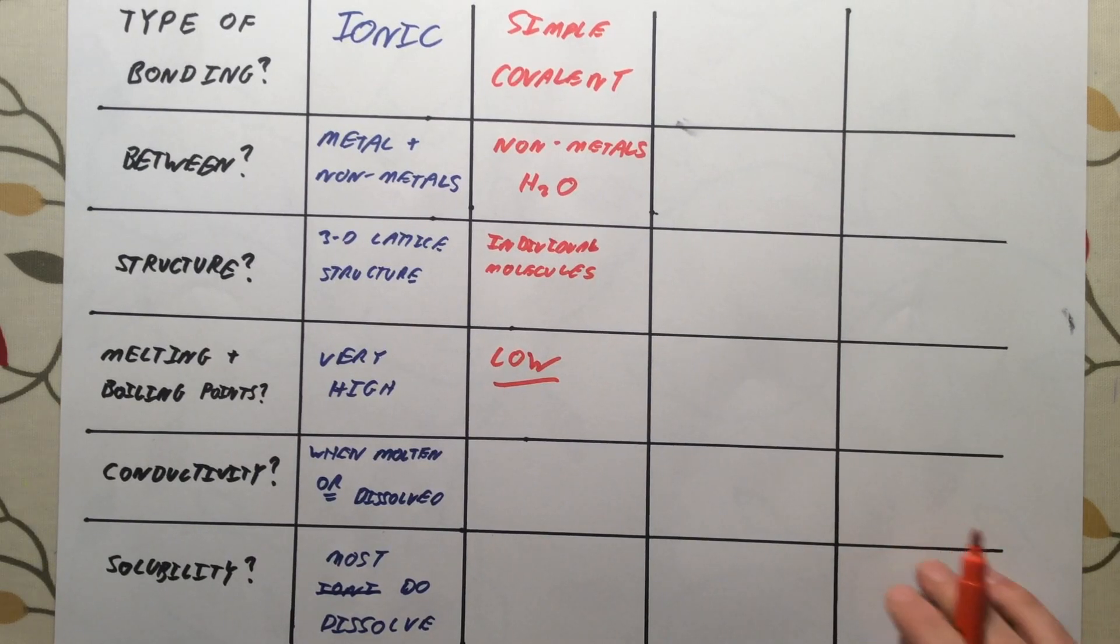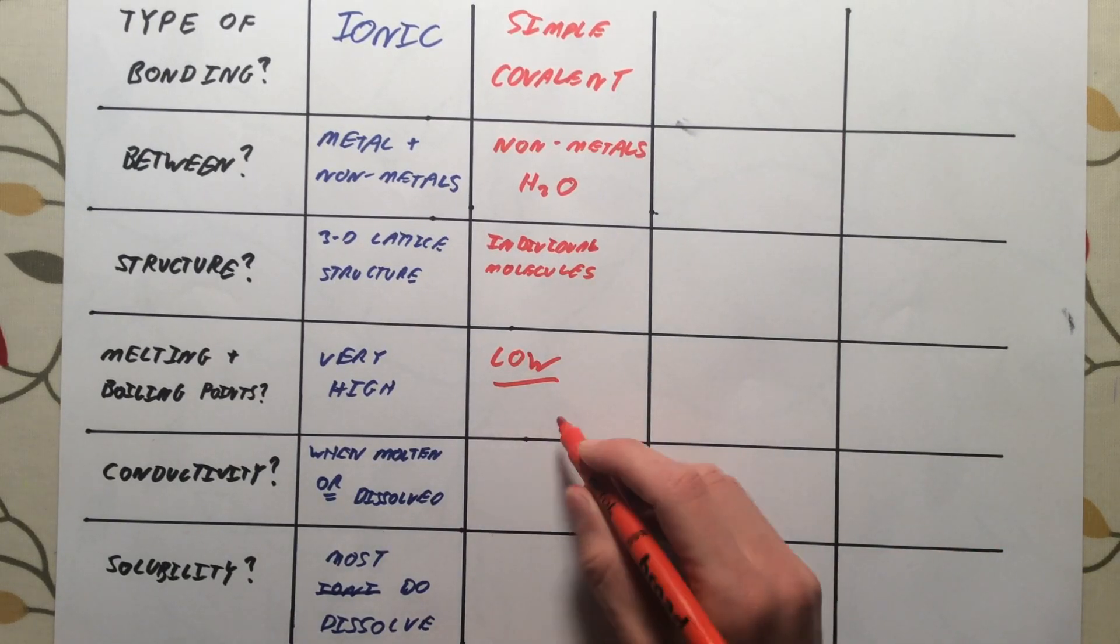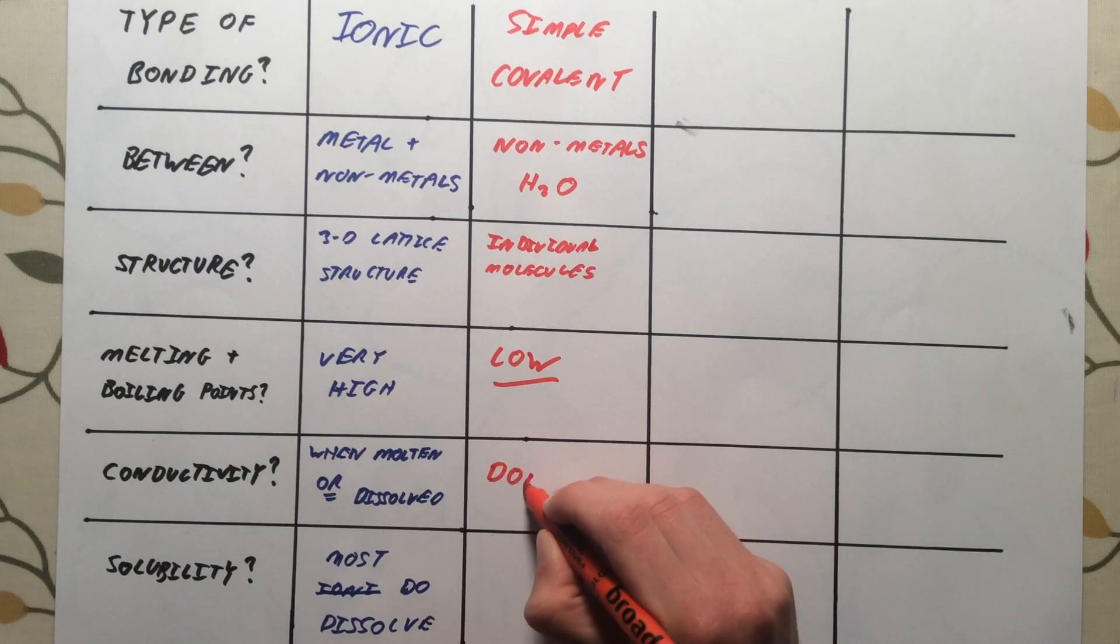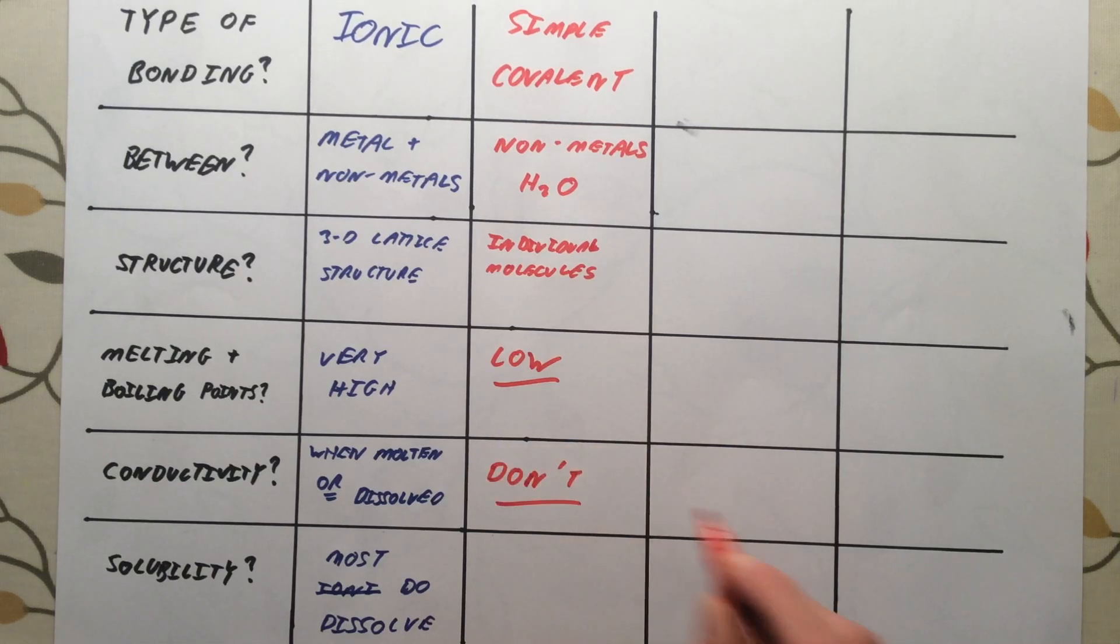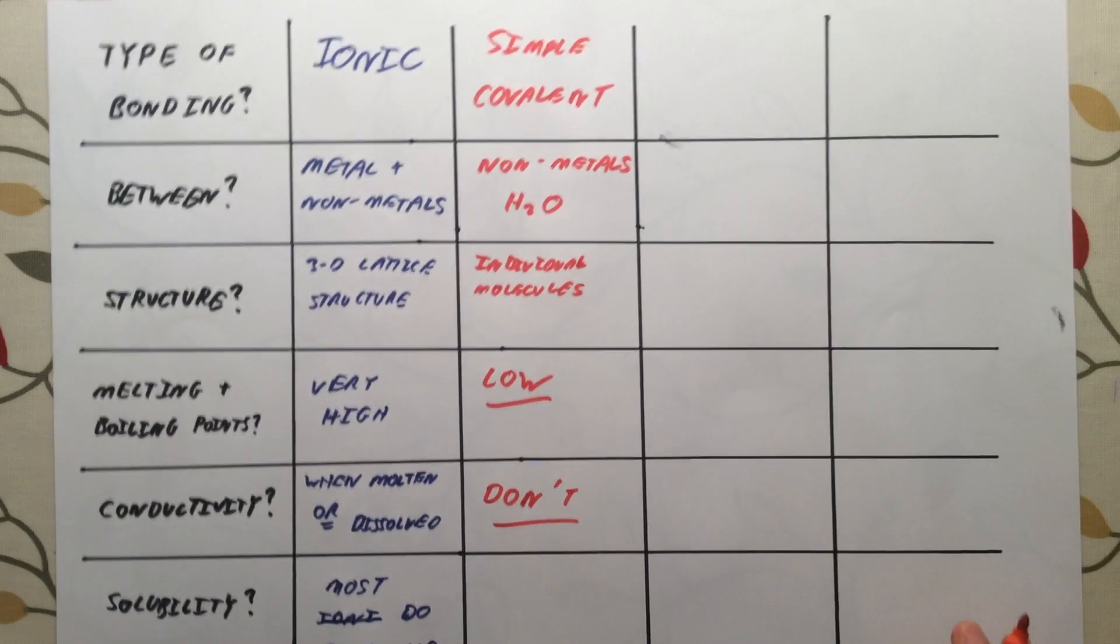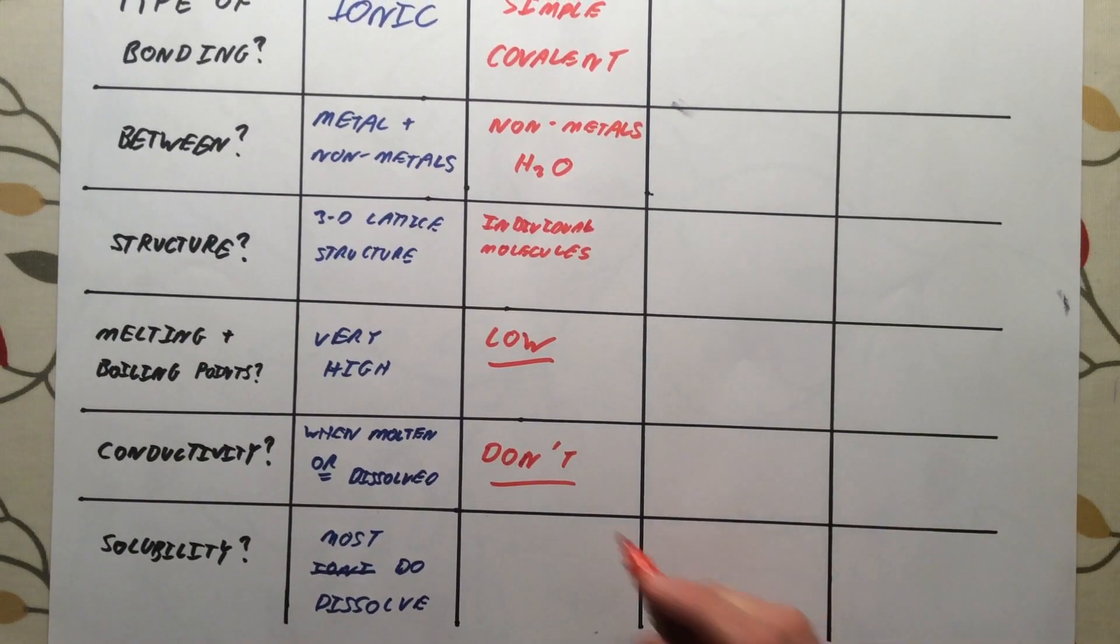Conductivity. Now, there are no charged particles in these. So simple covalent structures do not conduct. And again, since there are no charges, simple covalent compounds generally do not dissolve in water. Some of them do, but in general, they do not.